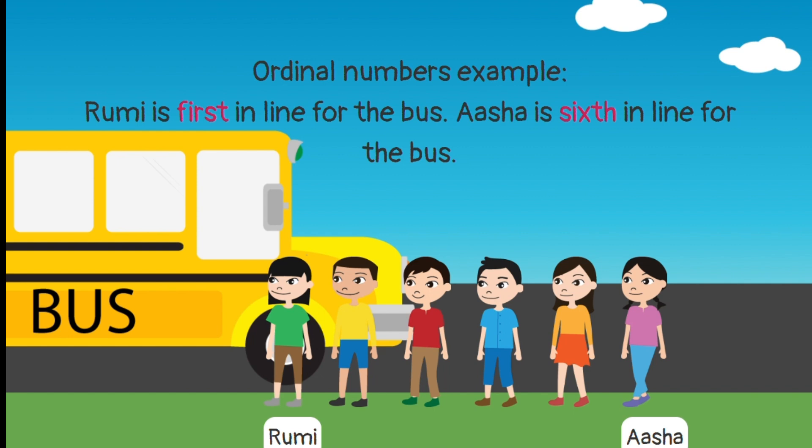Ordinal numbers. Example. Rumi is first in line for the bus. Asha is sixth in line for the bus.